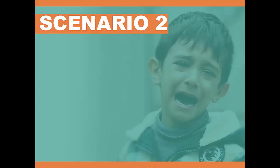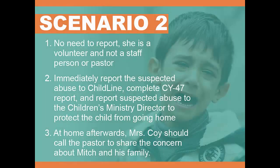Scenario 2: Mrs. Coy, an adult helping at VBS, notices a student in her group, Mitch, is wearing long sleeves despite the warm weather outside. When Mitch rolls up his sleeves in the sun, Mrs. Coy sees bruises and open wounds on his forearm. As the night ends, Mitch cries and tells Mrs. Coy that he is scared to go back to his house. What should Mrs. Coy do? Option 1: There is no need to report suspected abuse — she is only a volunteer and not the pastor or staff person. Option 2: She should immediately report the abuse to Childline, complete a CY47 report, and report the suspected abuse to the children's ministry director or pastor to protect the child from going home.